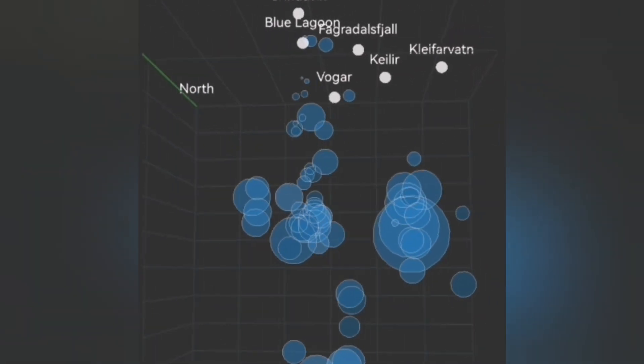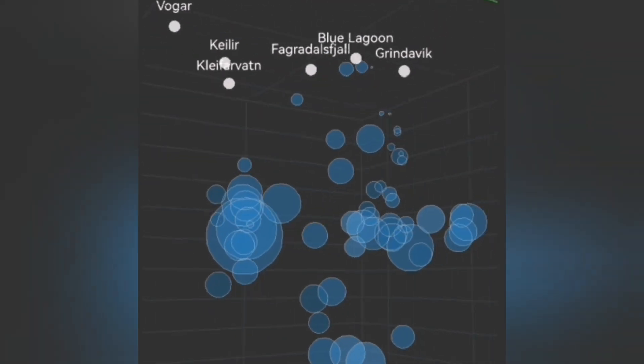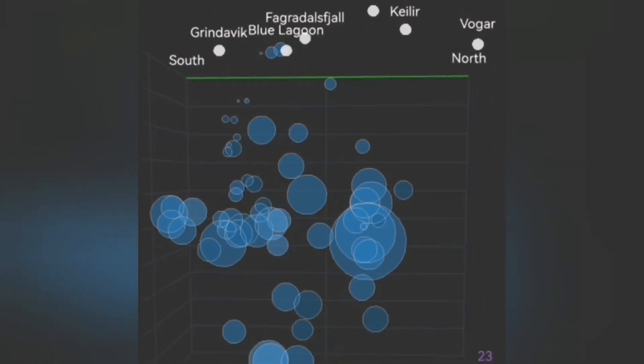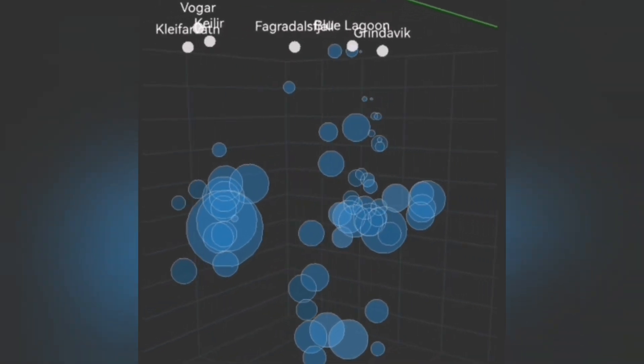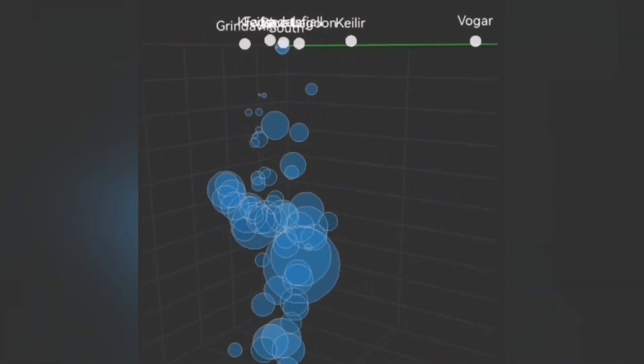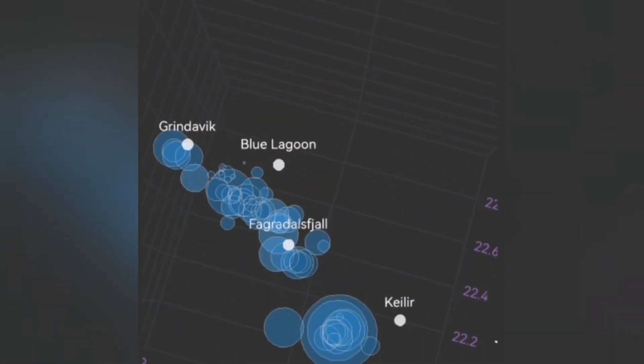Up to now, what we had at the depth of 5 km was the fault lines transferring the movement from Svartsengi toward the east. And that was the reason we had earthquakes at the Krysuvik and Kleifarvatn area.